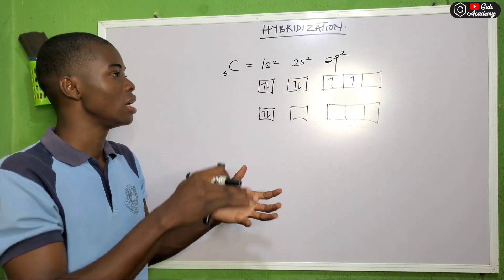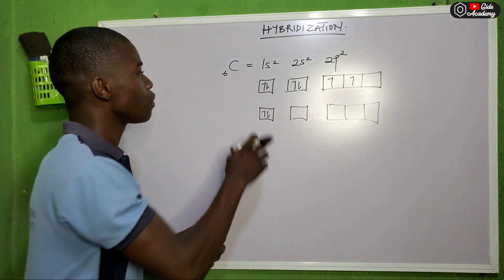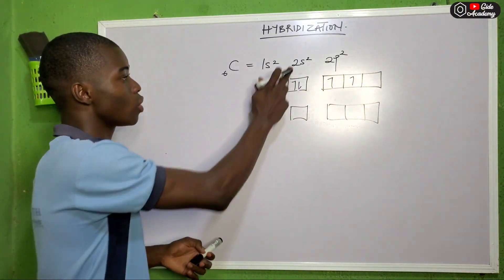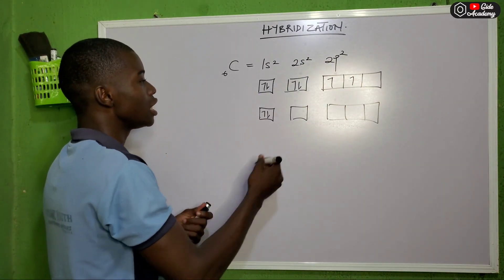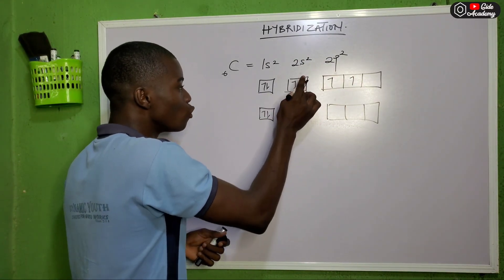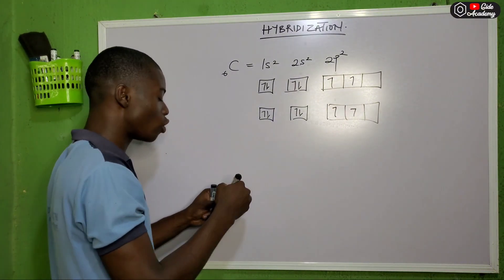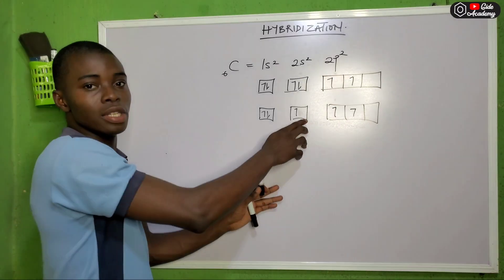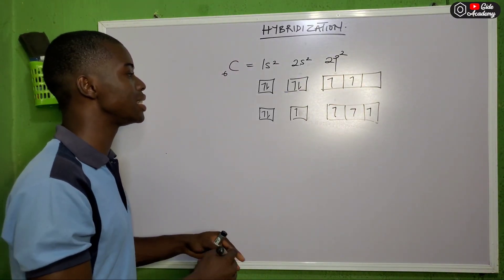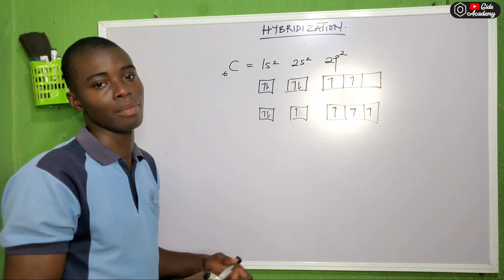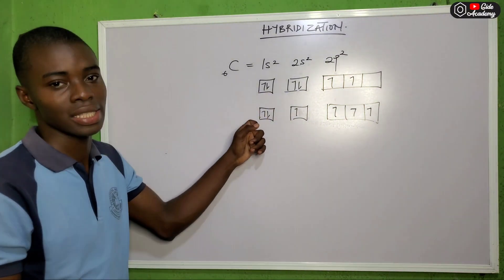One and two are not equal; two and two are equal. So hybridization can easily occur when energy levels are similar. When one of the 2s electrons moves to the 2p orbital, we call this the excited state of carbon, as opposed to the ground state.